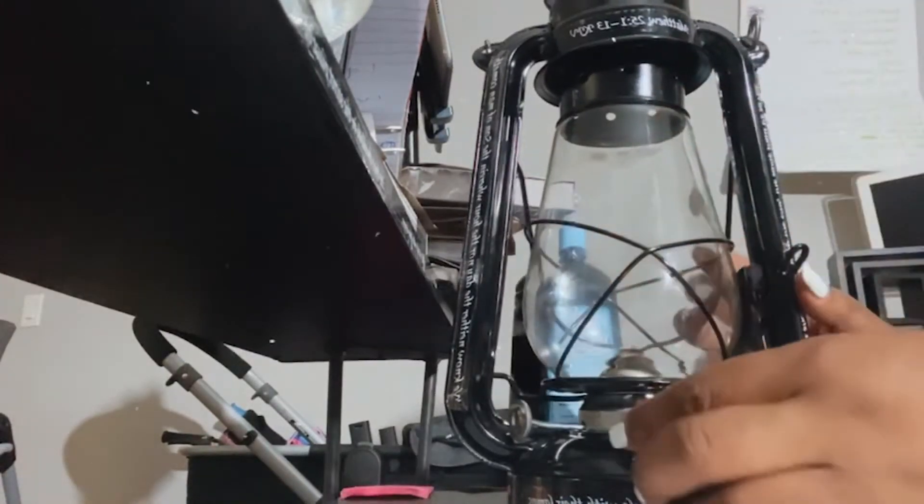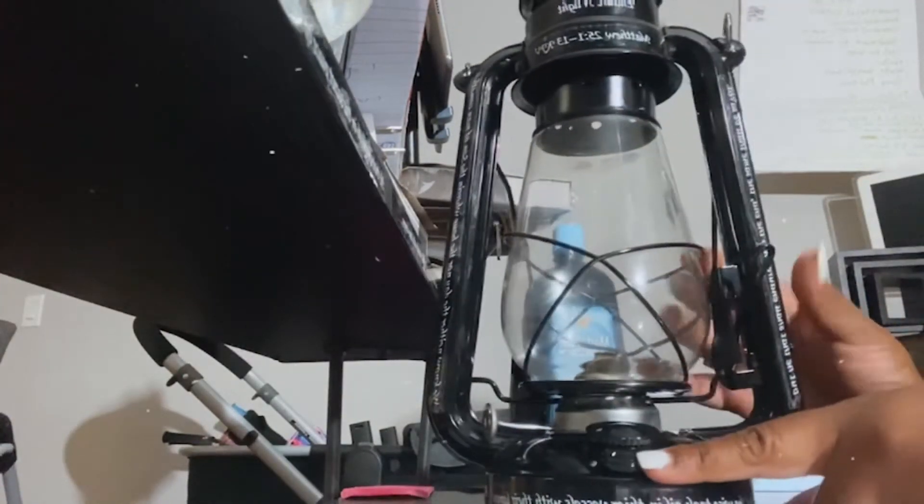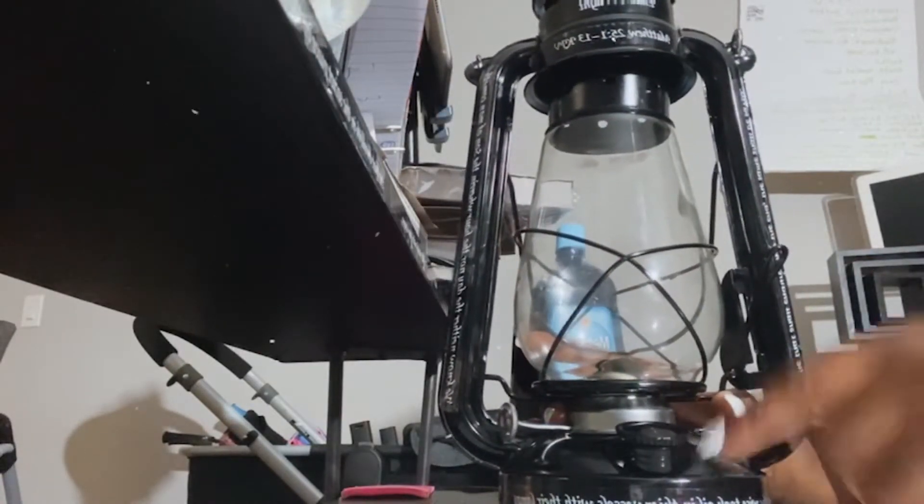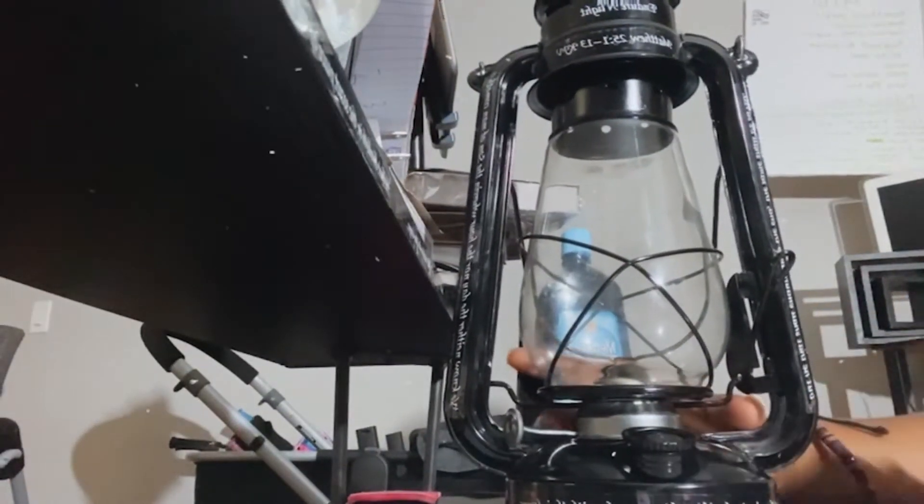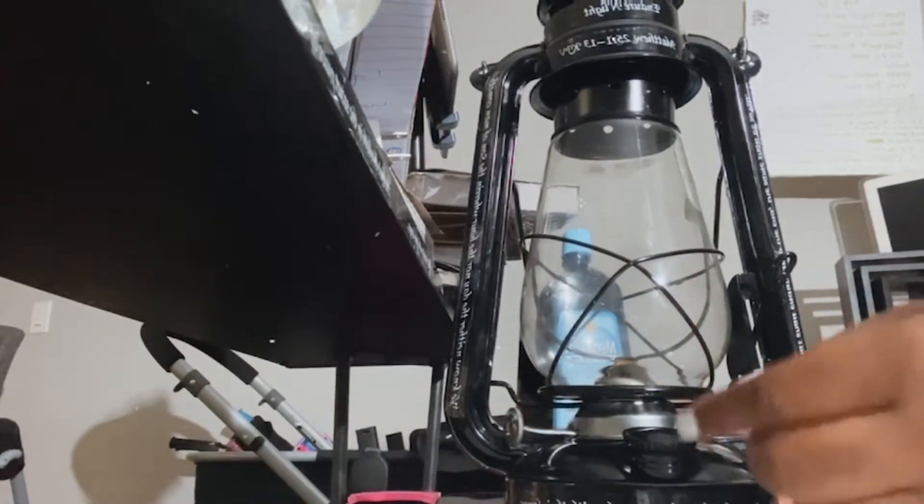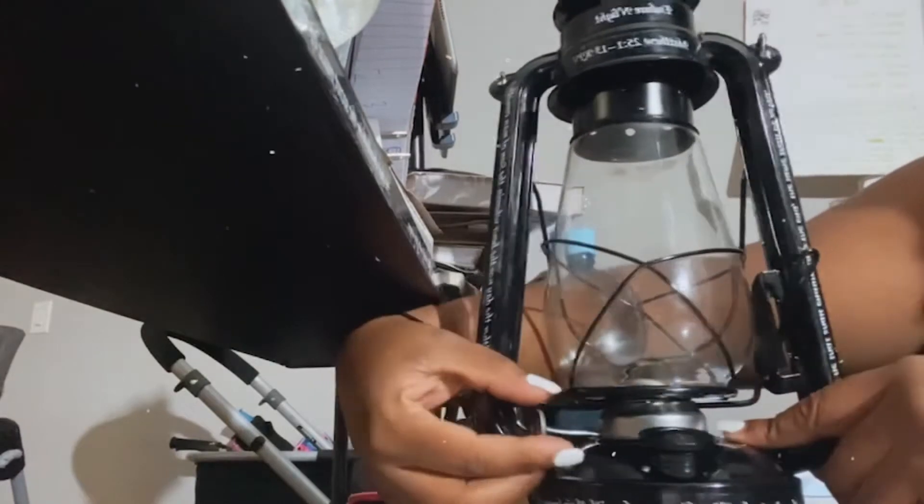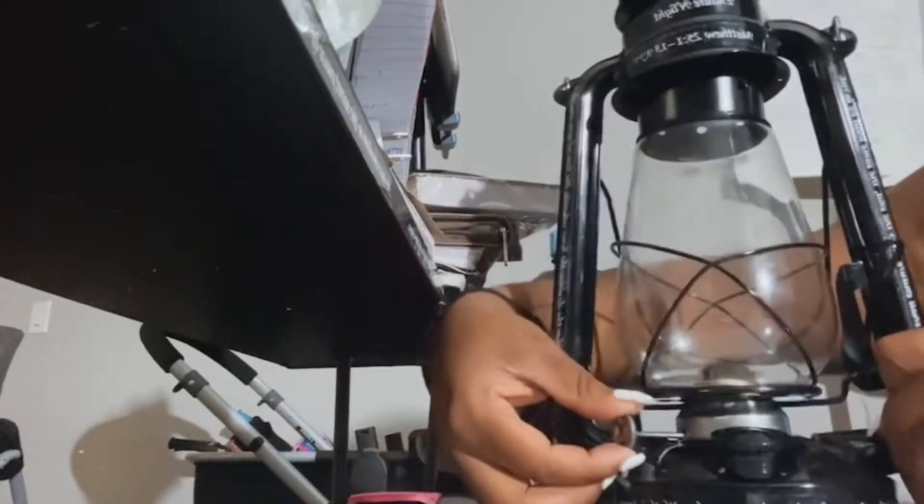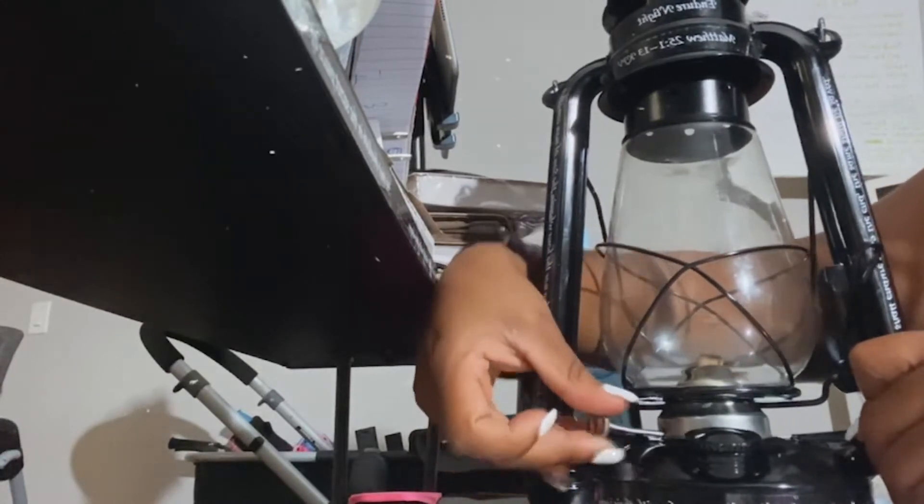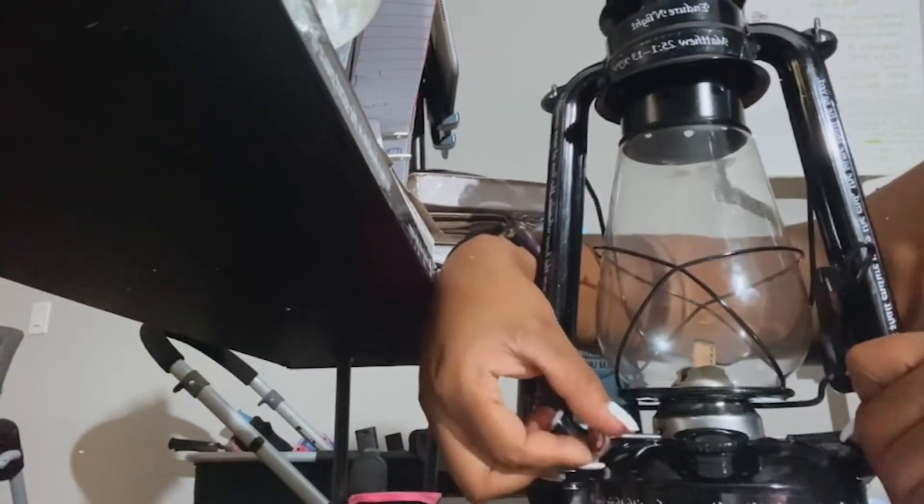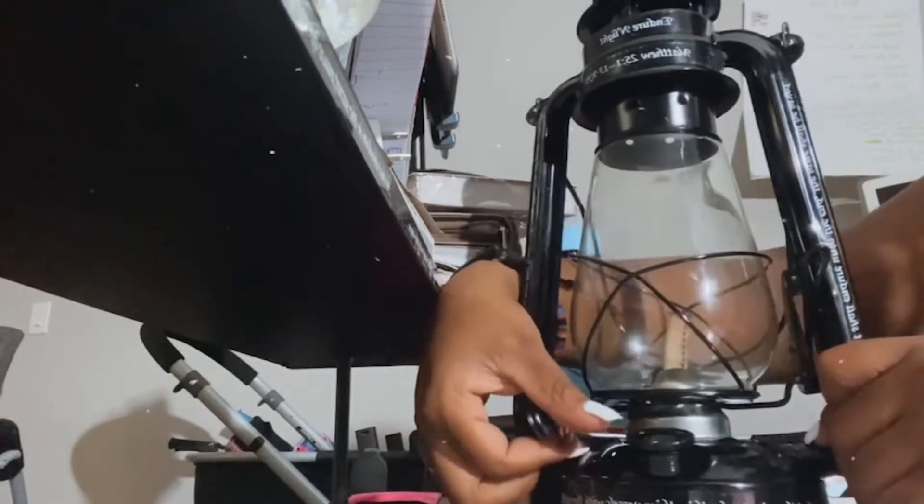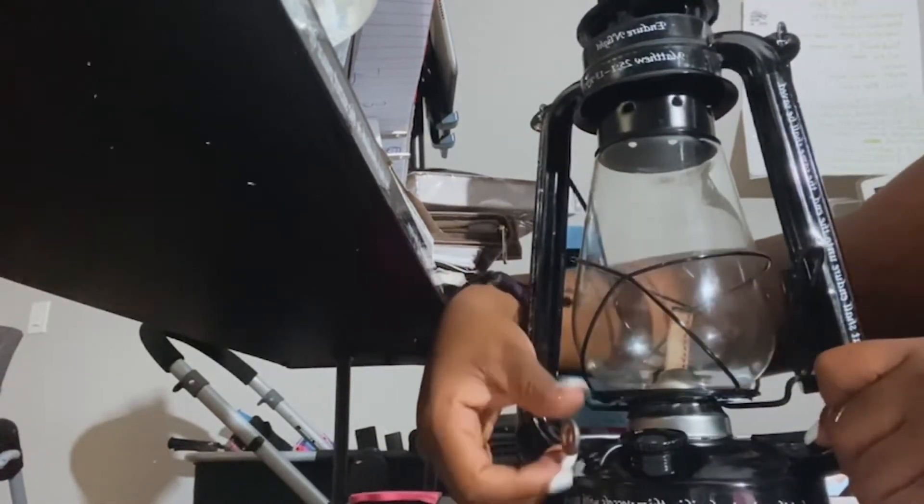So I already put the oil in. Using this right here, this knob, I screwed it off and I screwed it back on tightly. Usually you want your wick, which is this thing right here, you actually turn this. So as you can see, I'm twisting this knob and it is bringing up my wick. You will want that wick to be very saturated.